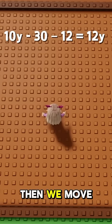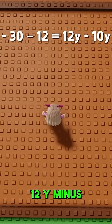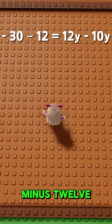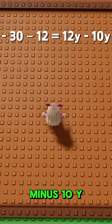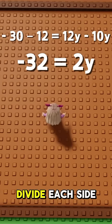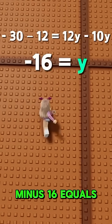Then we move the 10y to the other side which gives us 12y minus 10y. So now we have minus 30 minus 12 equals 12y minus 10y. That gives us minus 32 equals 2y. So we divide each side by 2 which gives us minus 16 equals y.